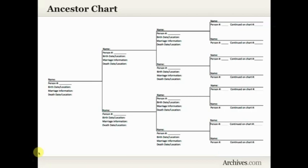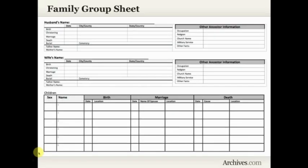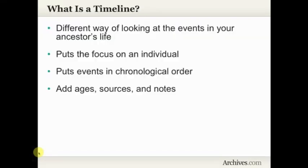Another tool we use quite frequently is the family group sheet, which is wonderful for seeing the husband, the wife, and all of their children — a great way to organize information about a particular family. But so much of our research is based on an individual. So what tool can we use to help visualize and organize information found for an individual? That's really where the timeline comes in.